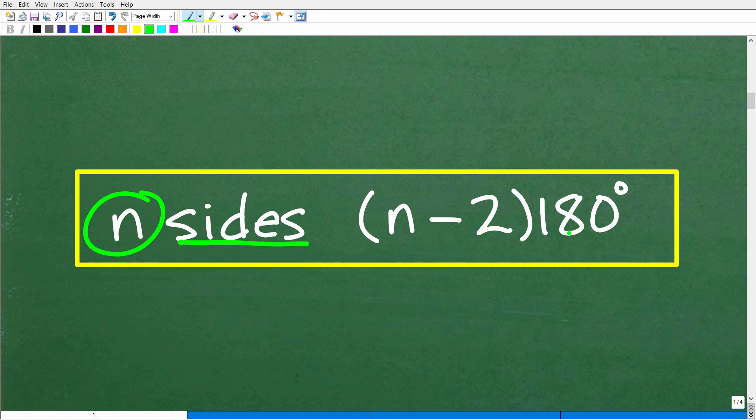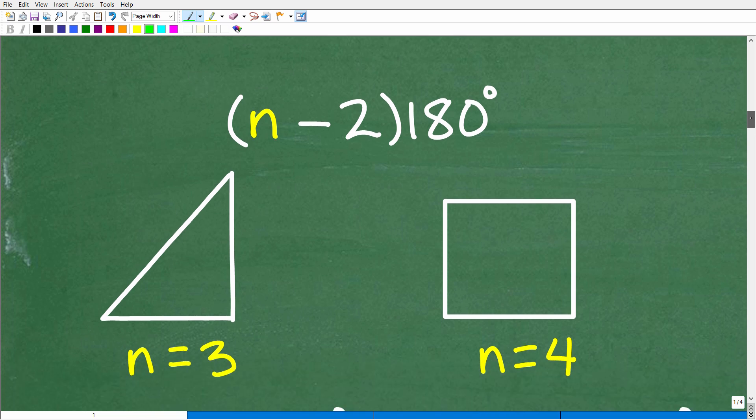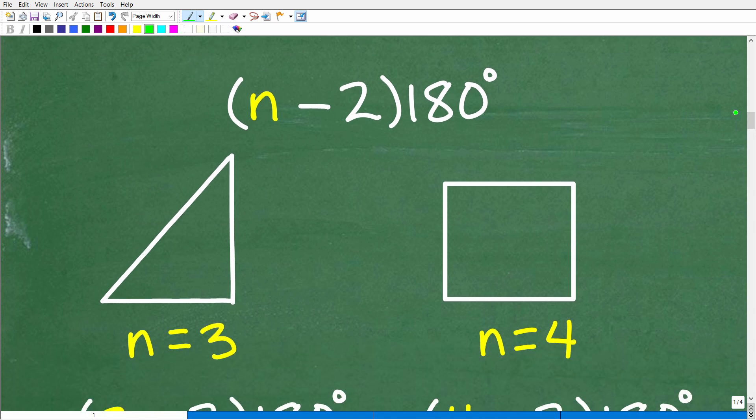This is the formula, and this is something that you may want to consider putting in your long-term memory if you are going to be studying math beyond algebra. N minus 2 times 180 gives us the sum of the interior angles of a polygon. Let's go ahead and see how this works with our triangle and square. We already know that the sum of the angles in a triangle is 180 degrees and the sum of the angles in a quadrilateral or square is 360 degrees. So let's go ahead and just use this formula. Let's act as if we didn't know the right answer.